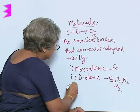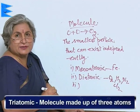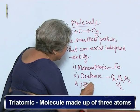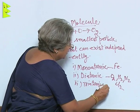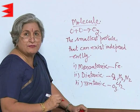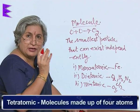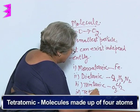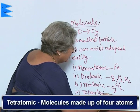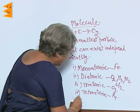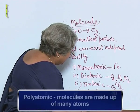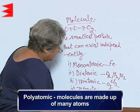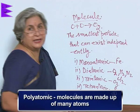In another case, what happens when three atoms of oxygen combine? They form ozone. So that is triatomic. In the case of phosphorus, the molecule is made up of four atoms, so it is tetraatomic. And in the case of sulfur, there are eight atoms — this is called polyatomic.